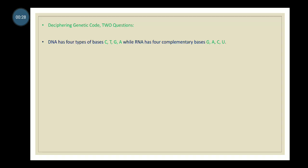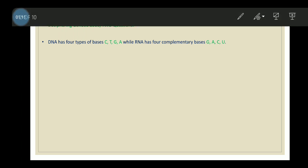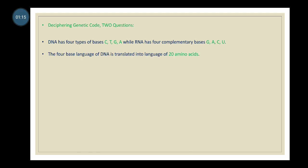In deciphering the genetic code, there are two questions. As we know, DNA has four types of bases: cytosine, thymine, guanine, and adenine. In RNA, there are four complementary bases. At the position of C in DNA, there is G in RNA; at T in DNA, there is adenine in RNA; at G in DNA, there is cytosine in RNA; and at adenine in DNA, there is uracil in RNA.